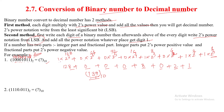This is the first method — you multiply each digit with its 2's power notation value and add all the values together to get the decimal number.